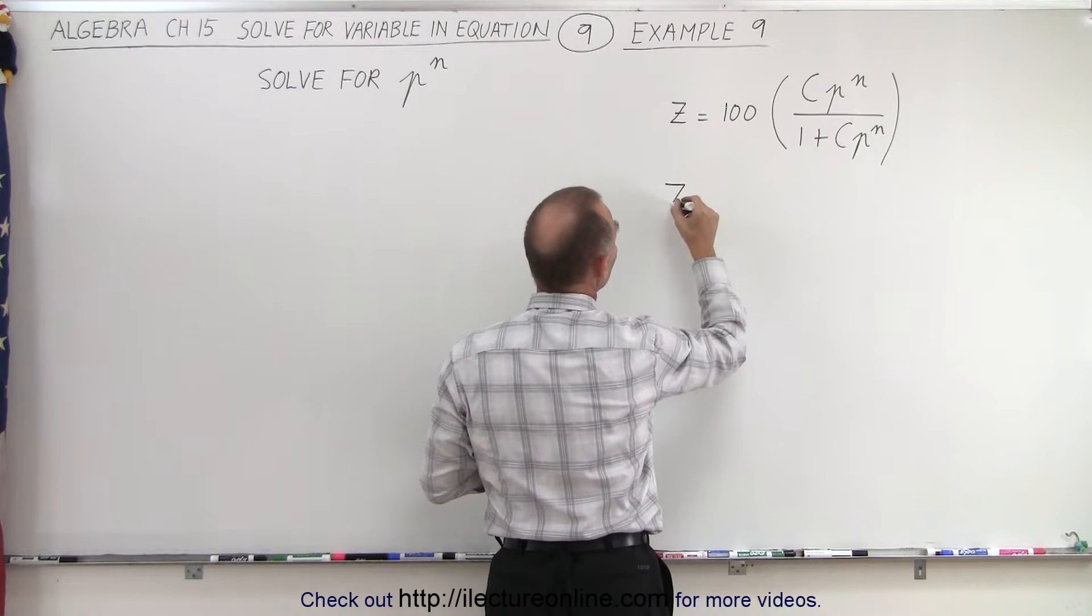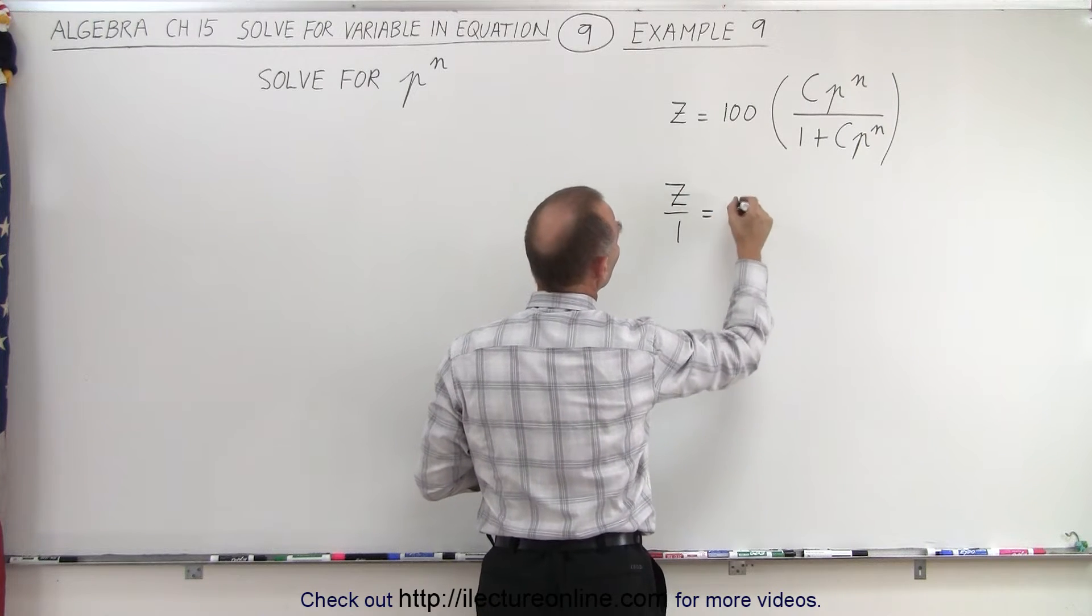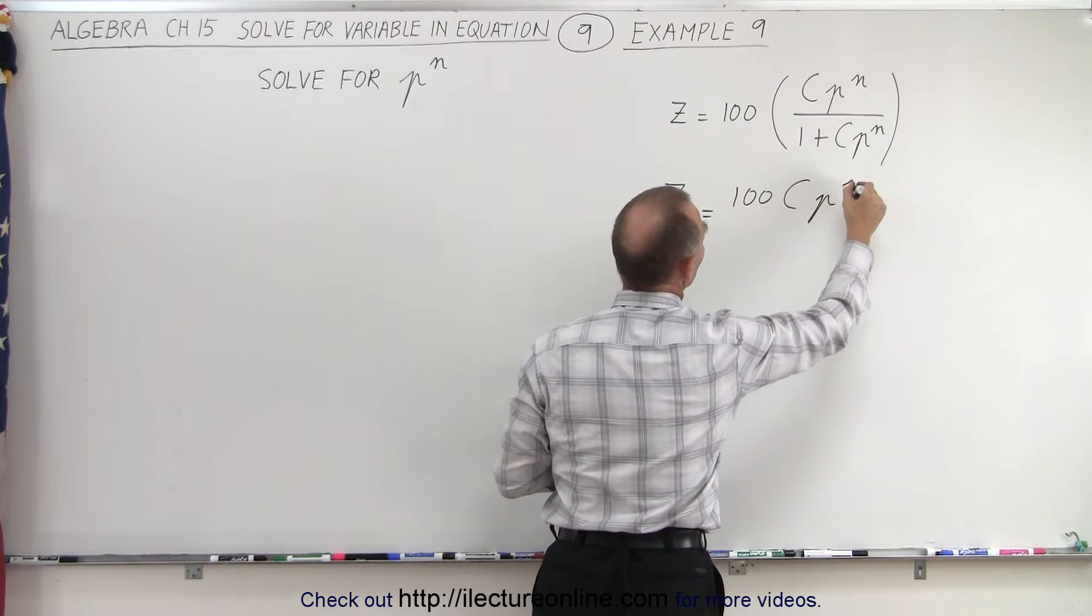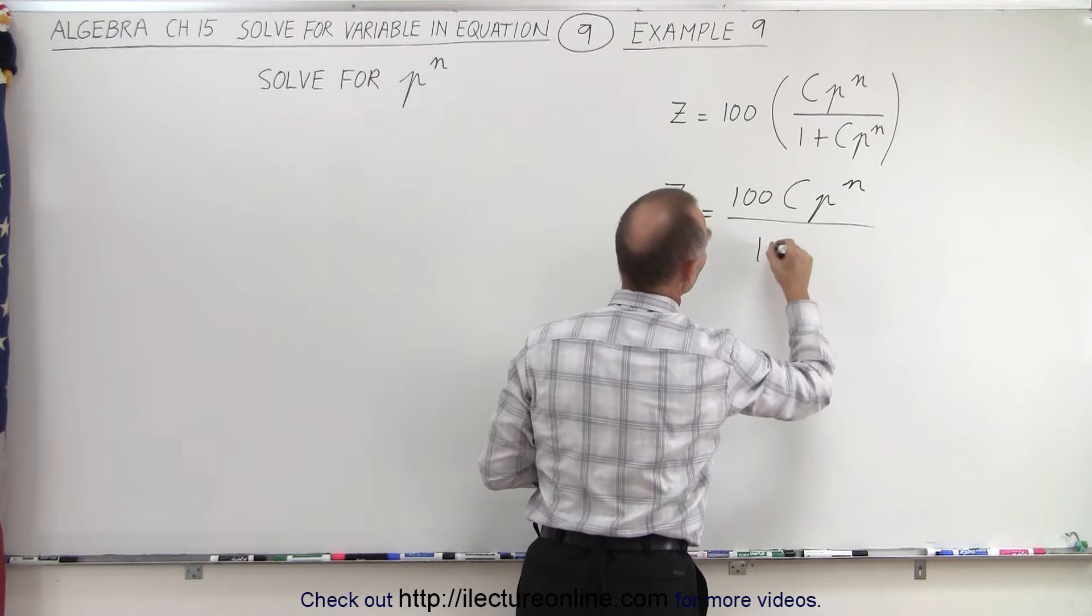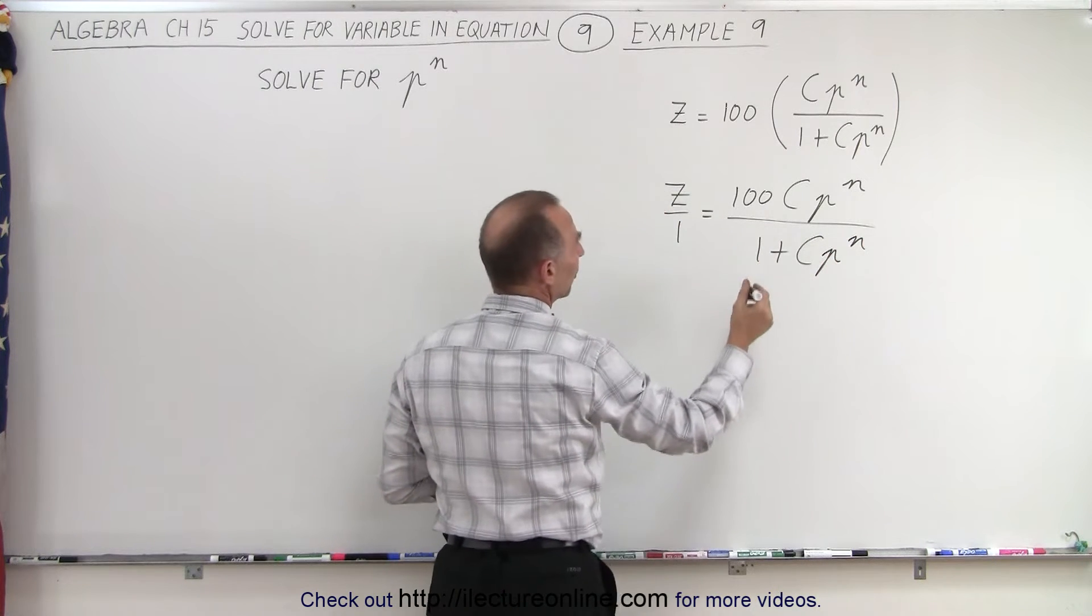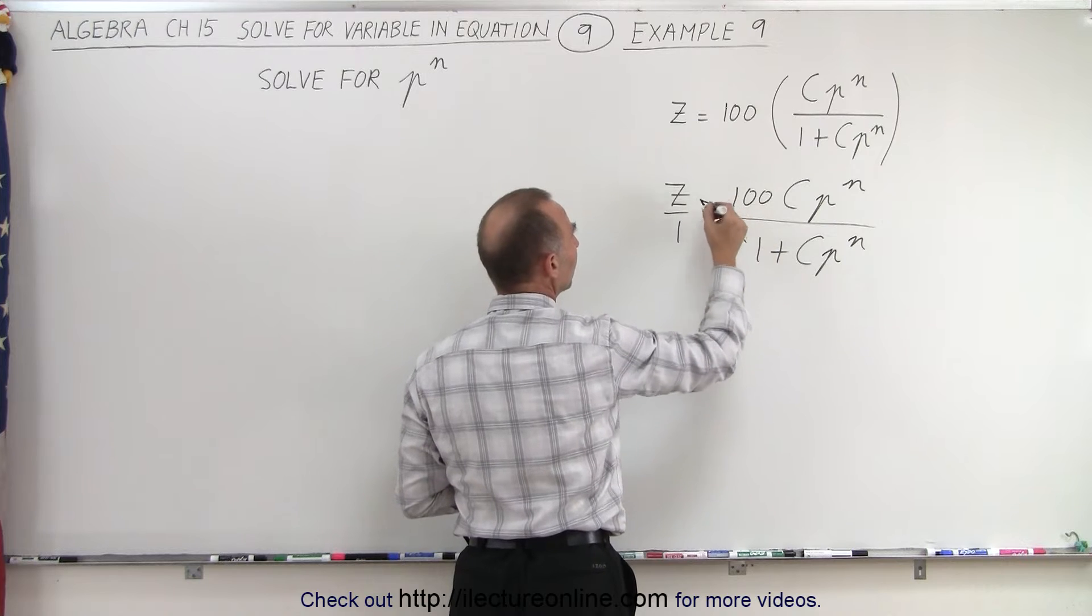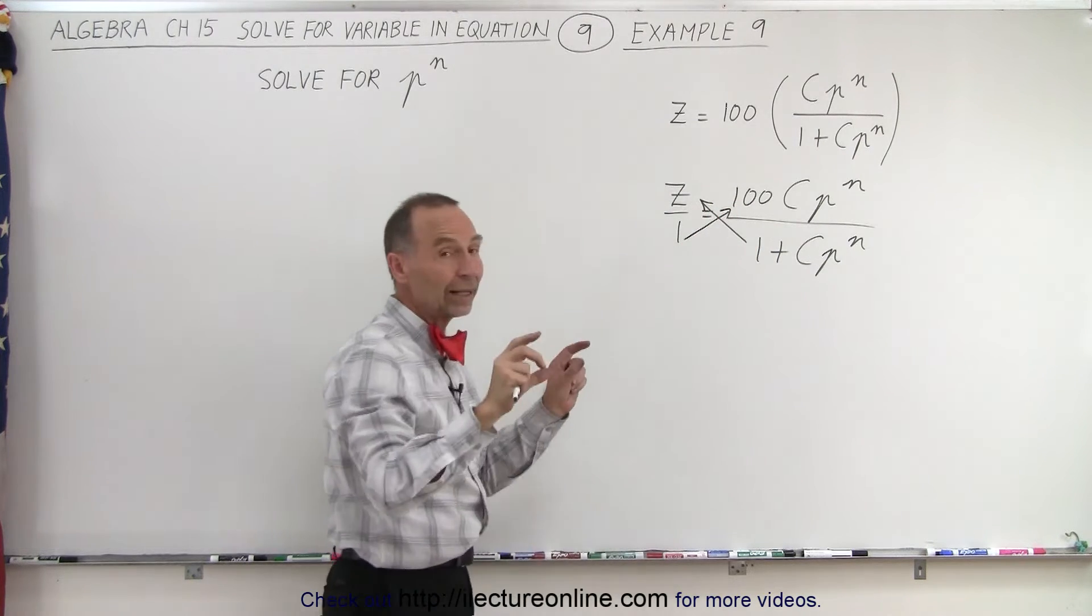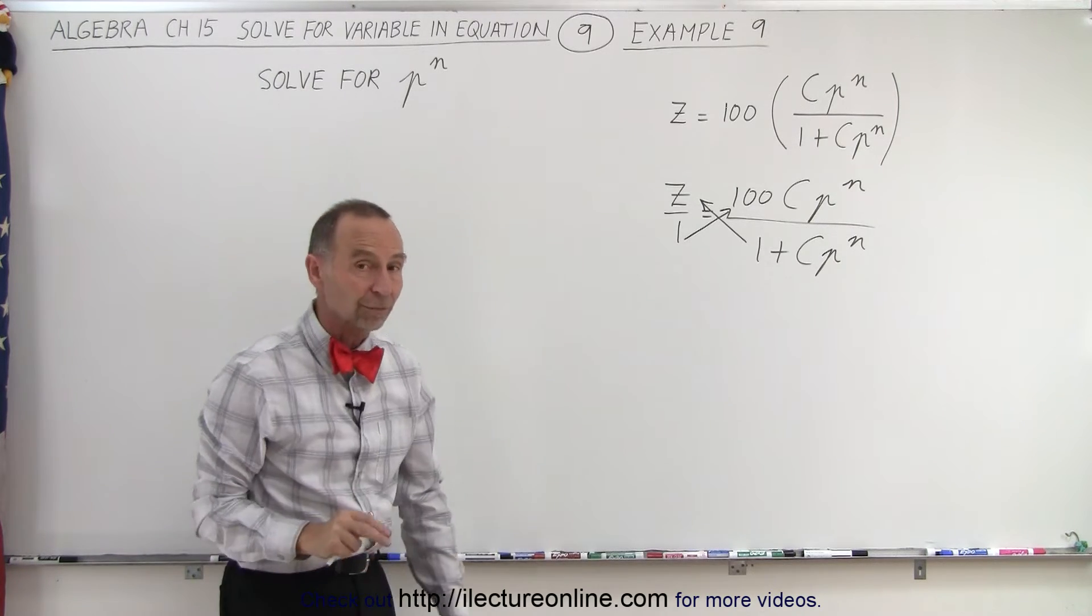This can be written as z over 1 is equal to 100 times c times p to the n divided by 1 plus c times p to the n. And then what we're going to do is multiply this, bring this over here and bring the 1 over there and write it as a series of terms on both sides of the equation.